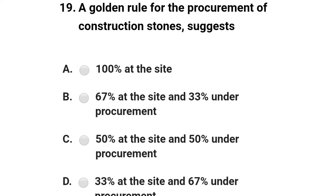Next question: a golden rule for the procurement of construction stones suggests — option A: 100% at the site; option B: 67% at the site and 33% under procurement; option C: 50% at the site and 50% under procurement. The correct answer is option B: 67% at the site and 33% under procurement.